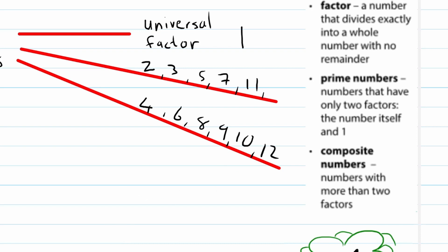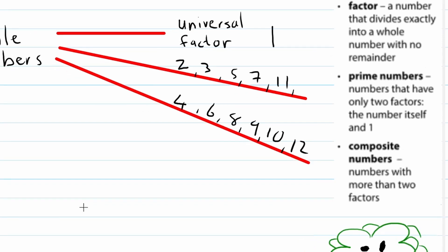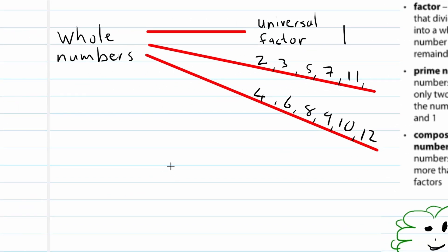Now I want to use these properties to introduce something called a factor tree. A factor tree is when you split a number into its prime factors — in other words, you look at which factors are prime numbers and split the number up in terms of those. Let's look at the number 56 as an example.